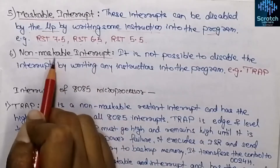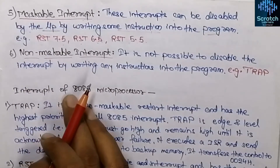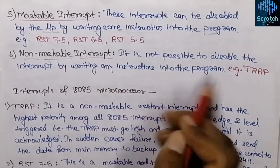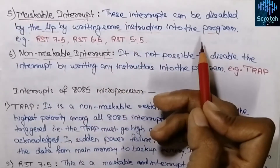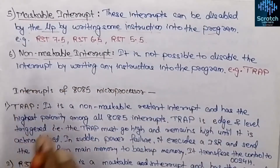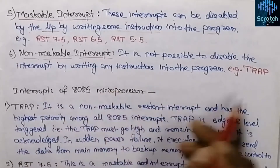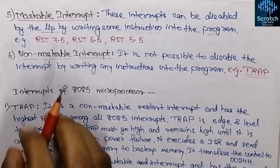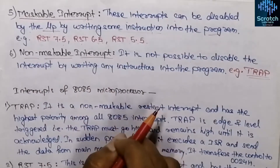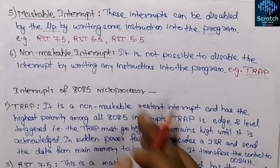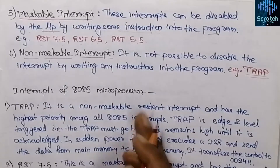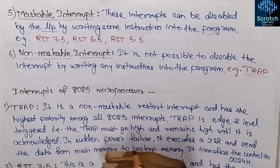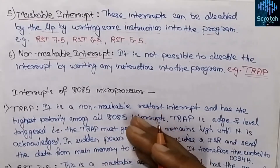Non-maskable interrupts are the opposite of maskable interrupts — it is not possible to disable the interrupt by writing any instruction into the program. In maskable interrupts it was possible to disable them, but here it is not possible. TRAP is the one and only non-maskable interrupt in the 8085. This covers the classification of interrupts in the 8085.